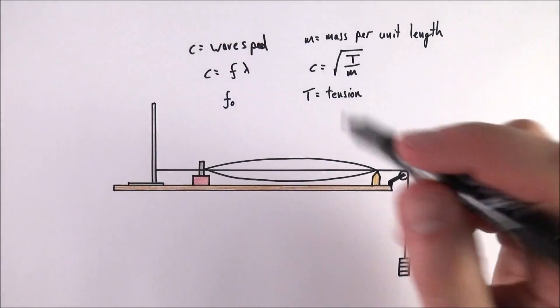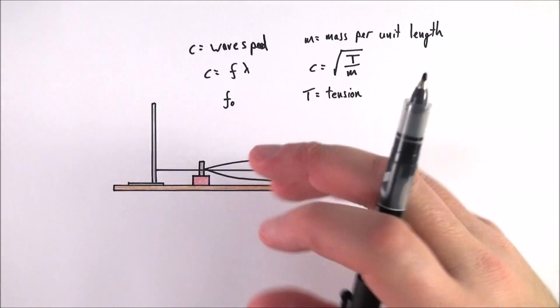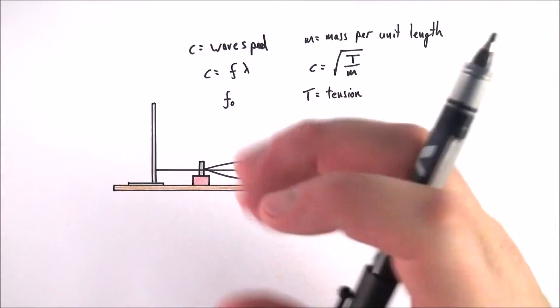A practical that you can carry out is to do with stationary waves on a string. This is a nice setup and when you get that wave forming really nicely, it is quite nice to see.